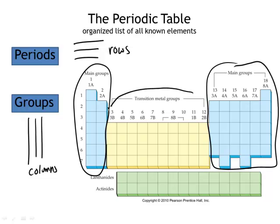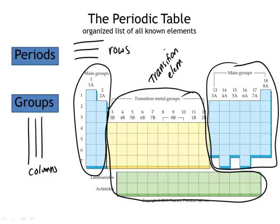The other elements, on this picture shown in yellow and green, are the transition elements. Those transition elements include the lanthanides and actinides, which are usually shown below the rest of the periodic table.